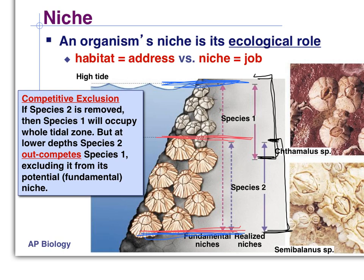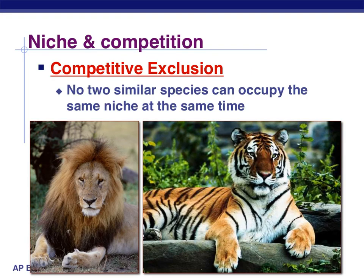So that's what competitive exclusion is: two species competing for the same thing, and one of them is just a little bit better than the other, so they get first preference and the other gets what is left. Pretty much, competitive exclusion says no two similar species can occupy the same niche at the same time, because one will outcompete the other for resources.